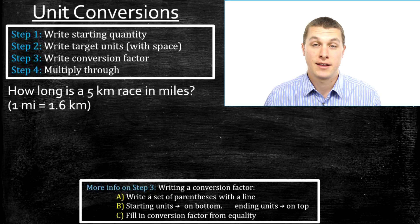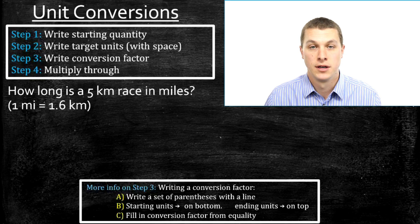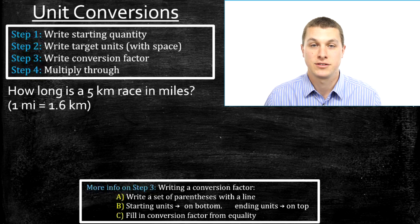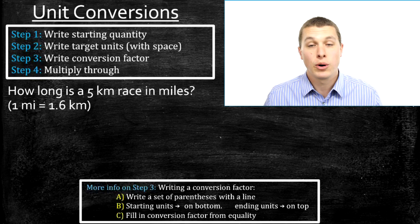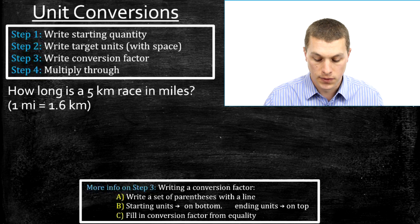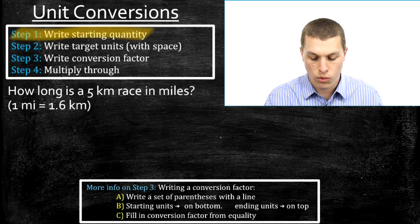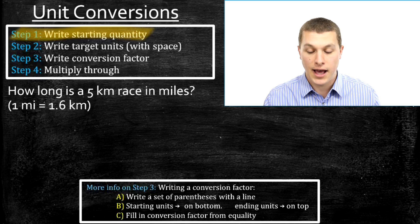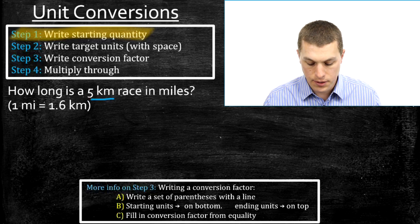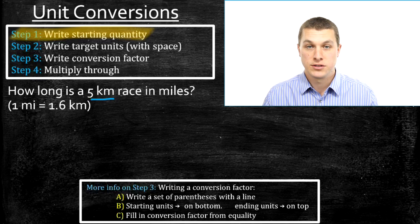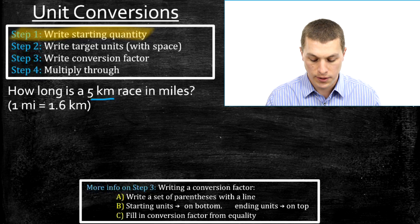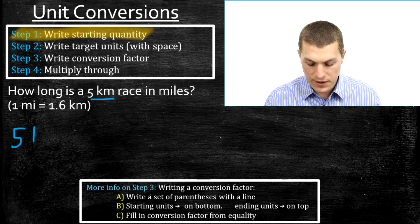The first example asks us to take five kilometers and convert to miles. If you've run a 5K, which is a common running length in the United States, you might have asked yourself how many miles did I just run? We can answer that using unit conversion. Step one just says write the starting quantity — that's the value you begin with. In this problem it's five kilometers, because that's what we were given, and we're going to write that down.